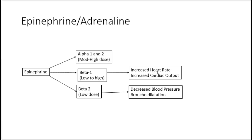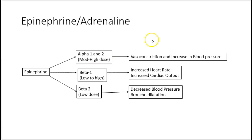At moderate to high dose, the predominant action is alpha 1, leading to vasoconstriction of blood vessels and thereby causing increase in blood pressure. So the unique pharmacological effect of epinephrine is that at low dose it causes vasodilatation and decreased blood pressure, but at moderate to higher doses you see the opposite — increased blood pressure due to vasoconstriction and increased cardiac output.